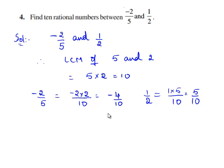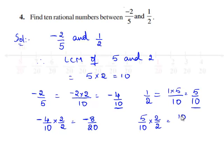Now, let us find the equivalent fractions of minus 4 by 10 and 5 by 10. Let us multiply both the numerator and denominator with 2. Therefore, we have minus 8 by 20. We should also multiply 5 by 10 with 2 on both numerator and denominator. Therefore, we have 10 by 20.